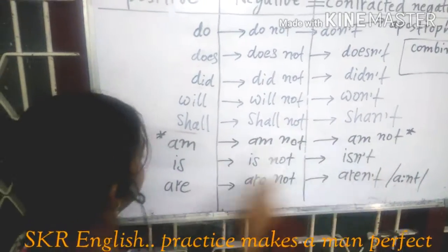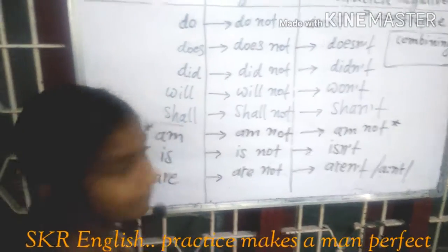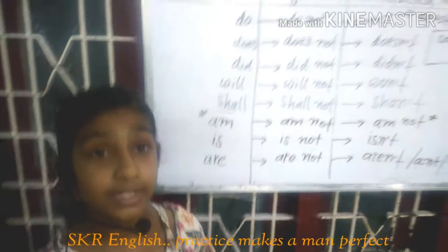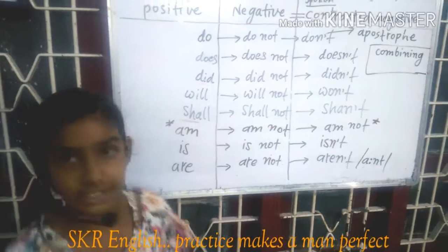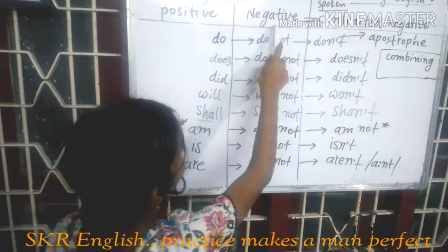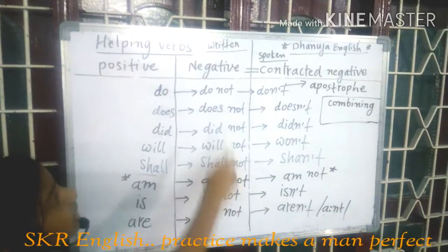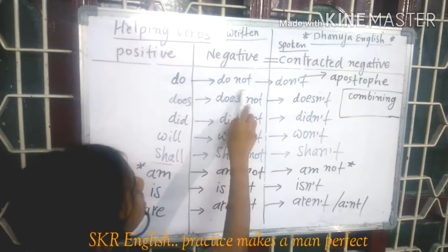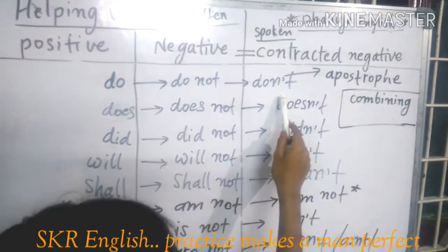Am — am not — am not. Is — is not — isn't. Are — are not — aren't. Note: for 'am', we don't use 'am not' in contracted negative. We only use the plain negative form 'am not'. In contracted negative we use an apostrophe, but 'am not' always stays as 'am not'.